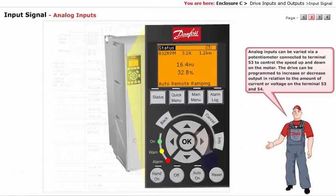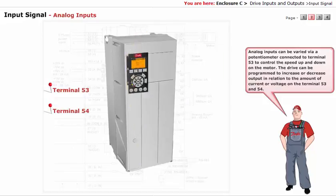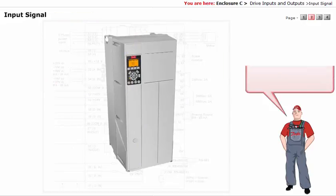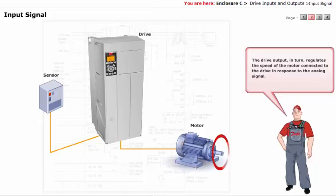The drive can be programmed to increase or decrease output in relation to the amount of current or voltage on the terminal 53 and 54. For example, a sensor or an external controller may supply a variable current or voltage. The drive output, in turn, regulates the speed of the motor connected to the drive in response to the analog signal.